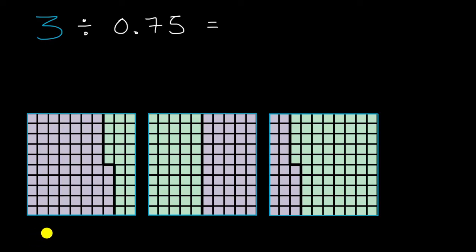So pause this video and use this little visual here as a big hint to figure out what three divided by 75 hundredths is. All right, now let's do it together.